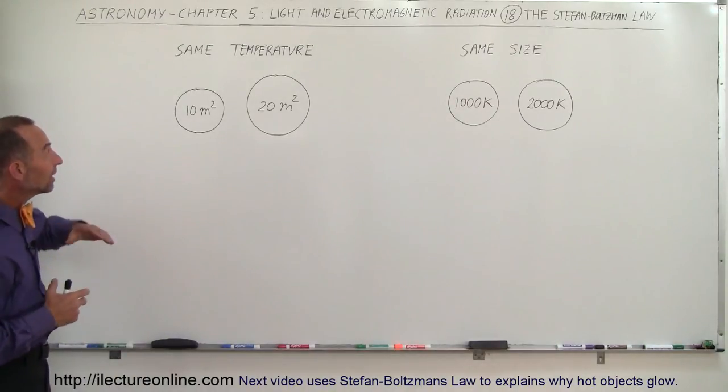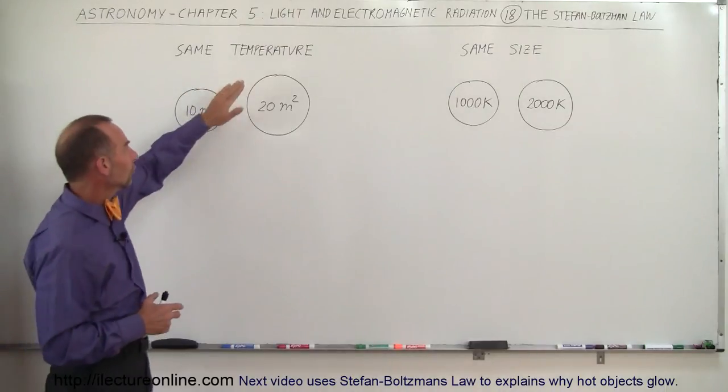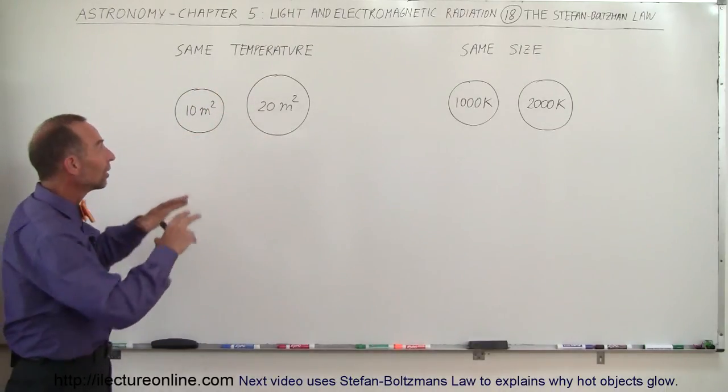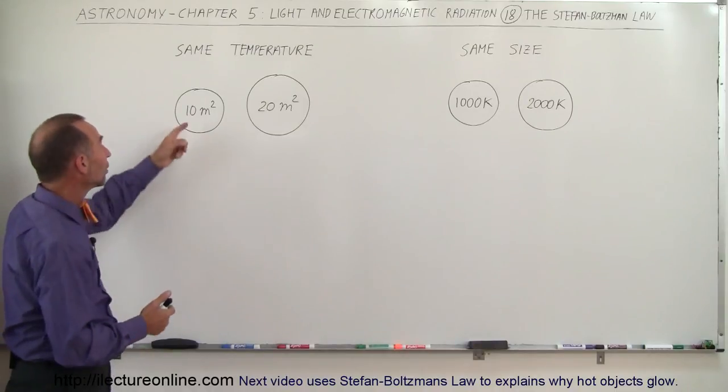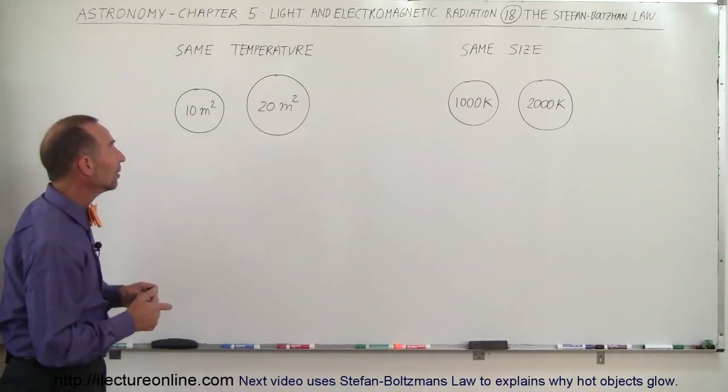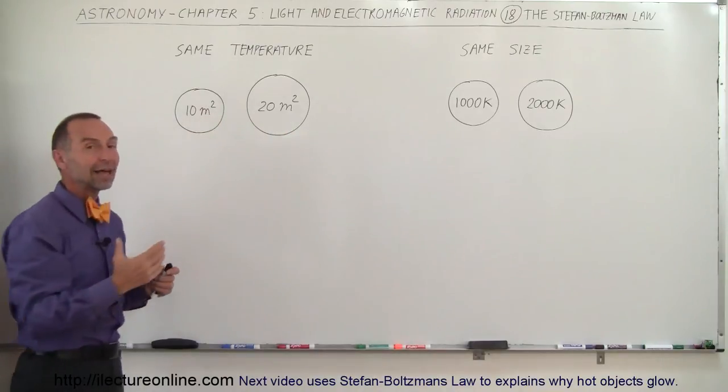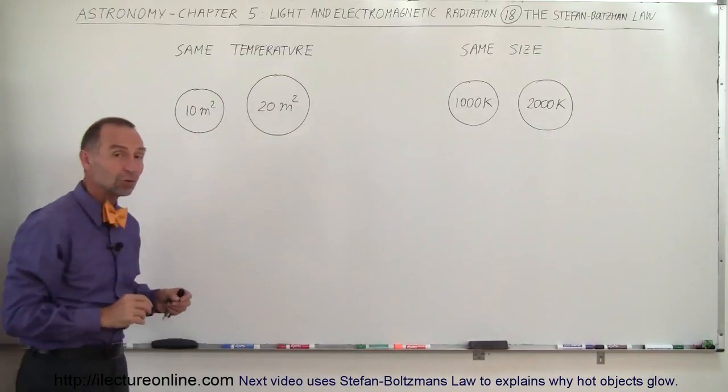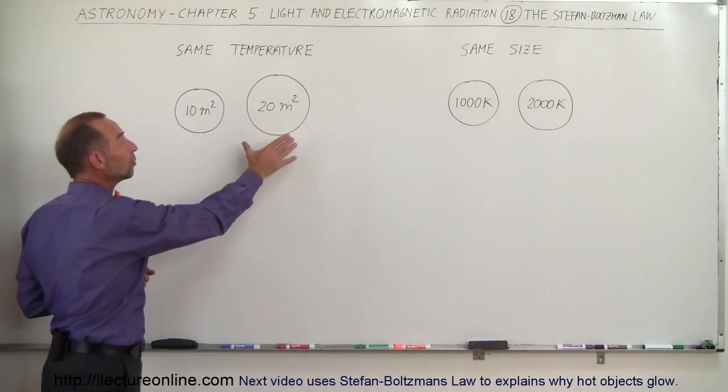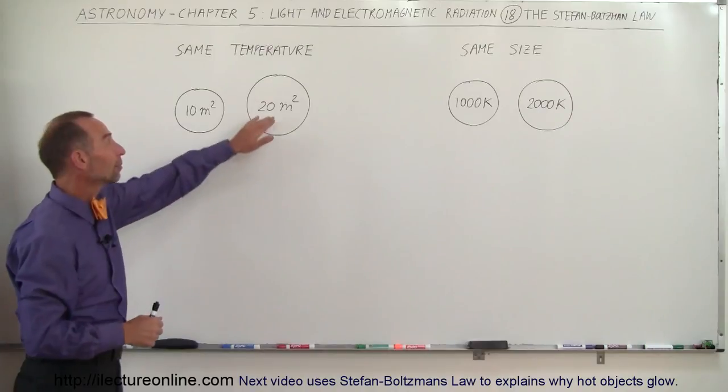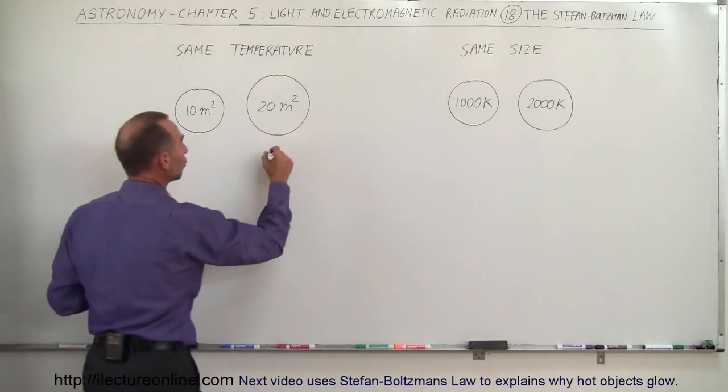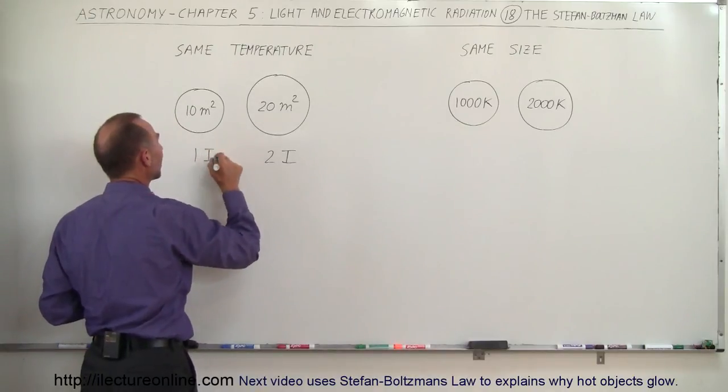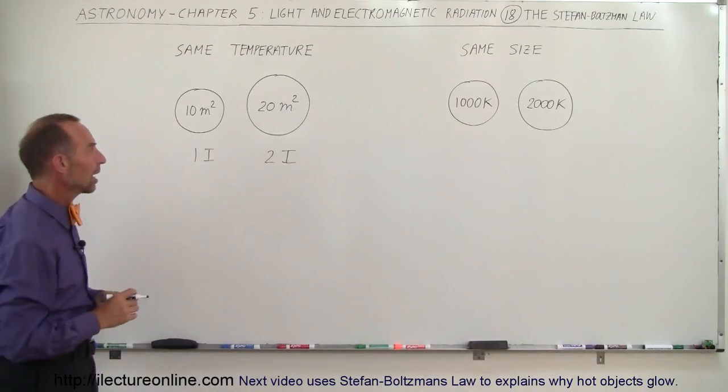Their studies indicated that if two objects were at the same temperature, but one was bigger than the other, let's say both are spheres and one has a surface area of 20 square meters and the other 10 square meters, if the area is twice as big, the radiation coming from the bigger object would be twice as strong. So we could say two times the intensity versus one time the intensity.